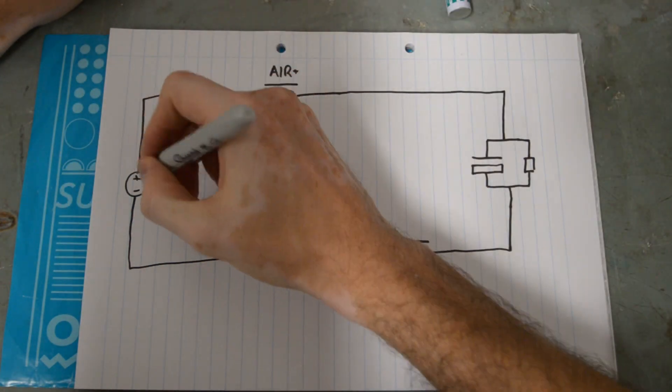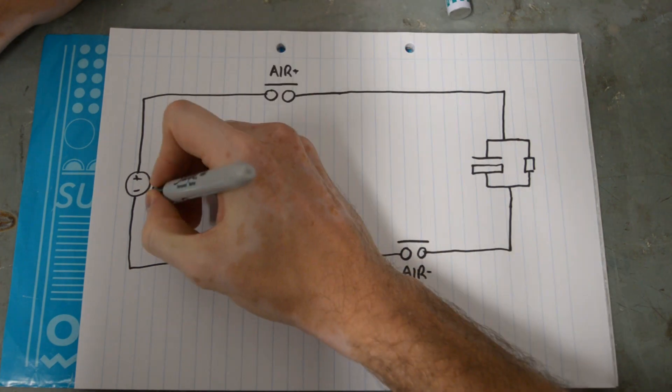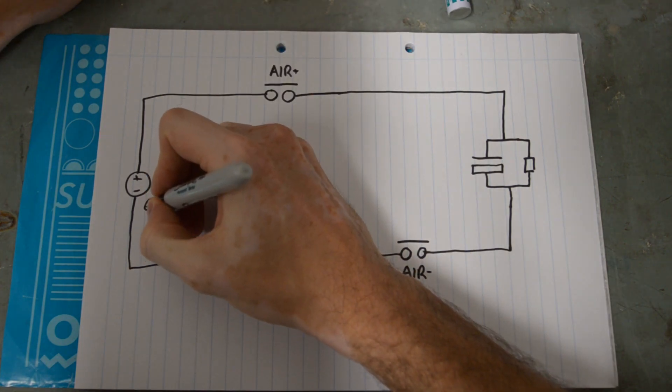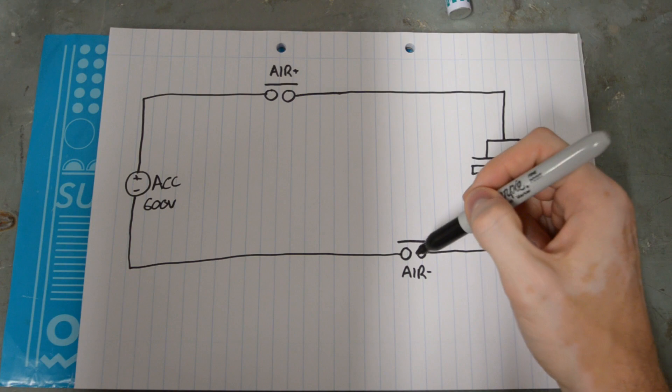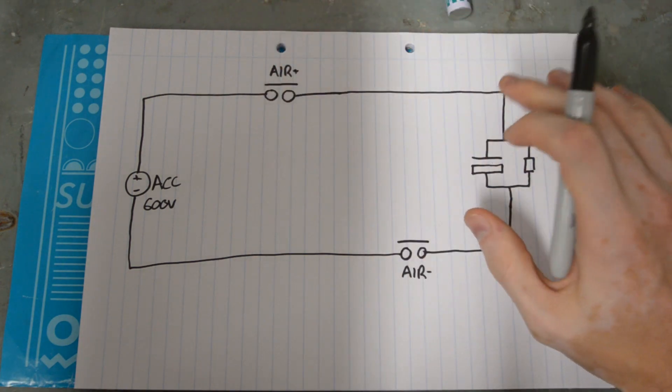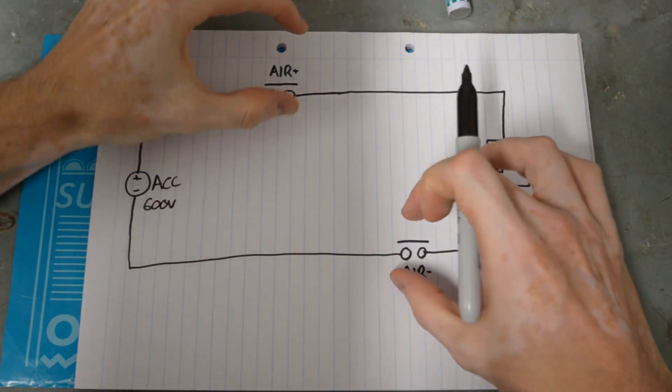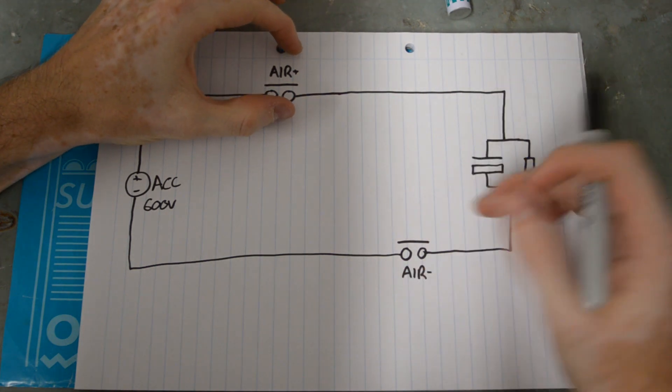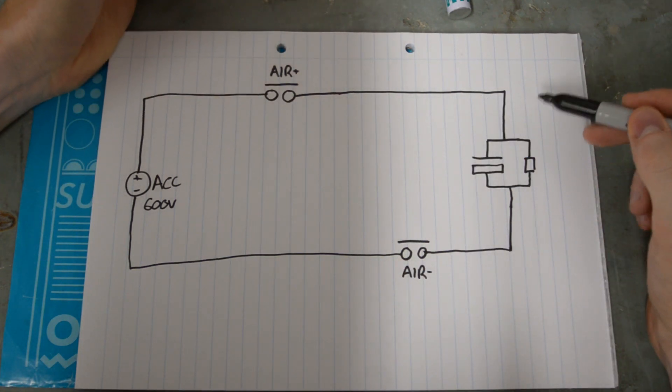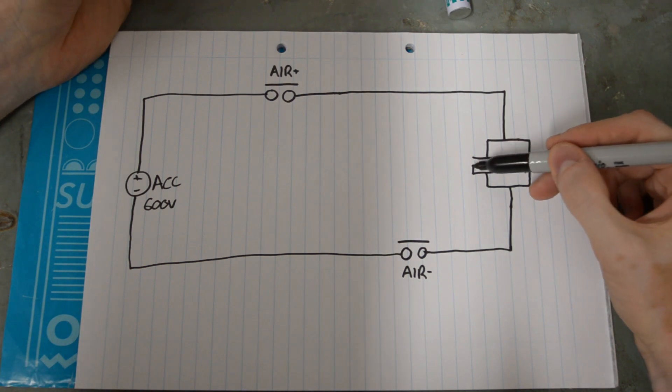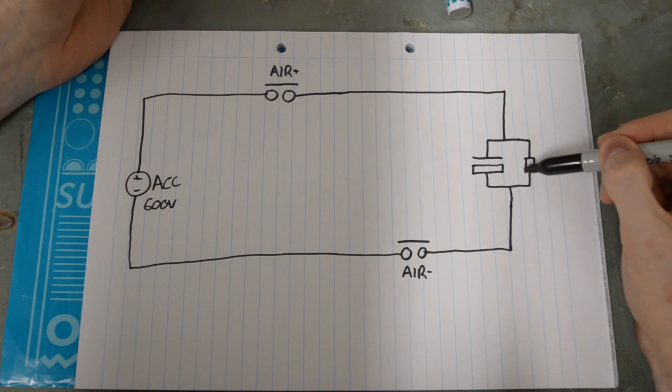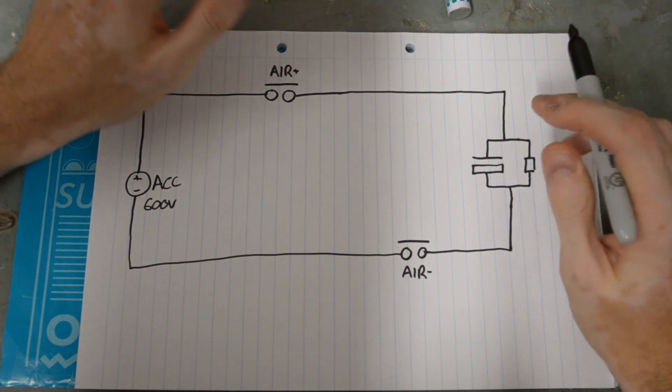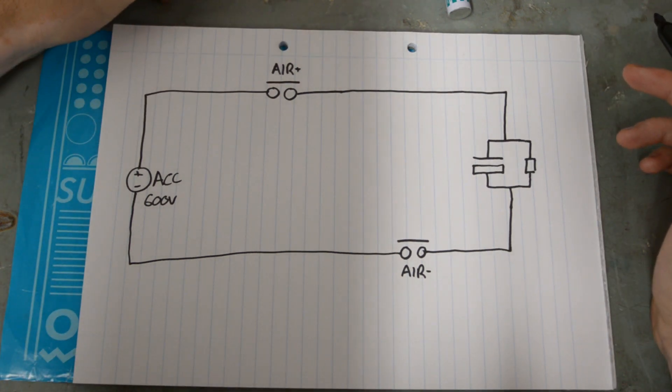So if you're not familiar with tractive system, let's just start with that. We have our accumulator and that could be up to 600 volts as allowed by FSAE. We've got our two AIRs, the positive air and negative air. They isolate the tractive system from the accumulator - they're basically completely disconnected when they're open. And we also have the tractive system itself, and electrically the motor controllers just look like a big old capacitor with a little parasitic resistance hanging off it that just very slowly discharges that capacitor when not powered, basically to make it tend towards being safe.